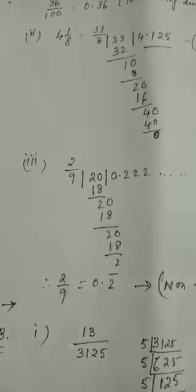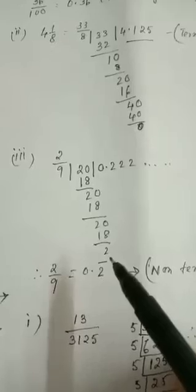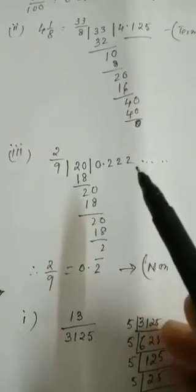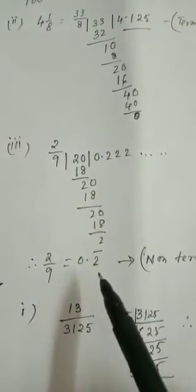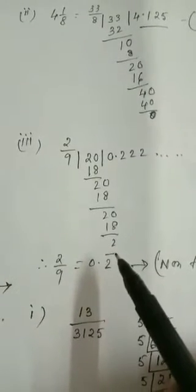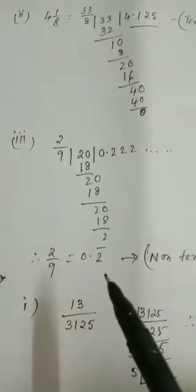Now we will take the third sum of number 2. You have to find the decimal expansion of 2 by 9. When you divide, you find that the remainder is not coming to 0. Therefore the division continues and you get 0.222... repeating the same number. So you can write 2 by 9 is equal to 0.2 recurring — either you put a recurring dot at the top of 2, or you can put a bar. Because the same number is repeating, you can put a bar to represent the number. So you can write this as a non-terminating recurring decimal since it is continuing.